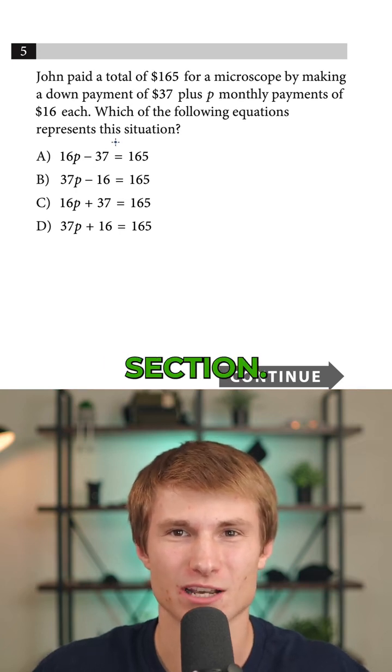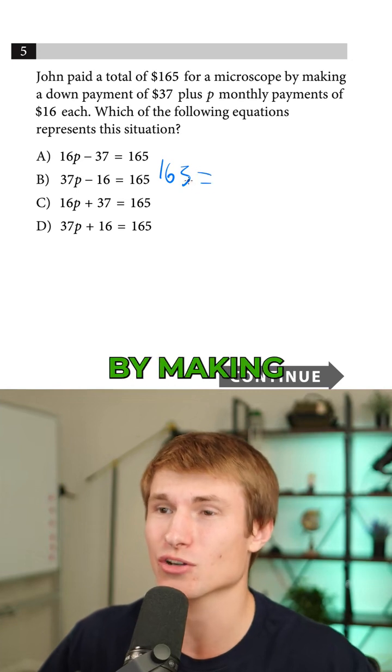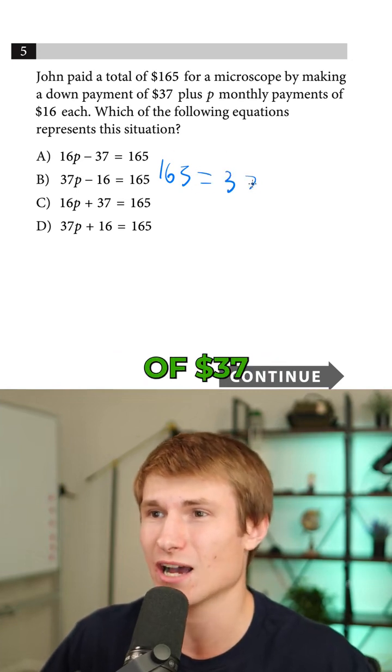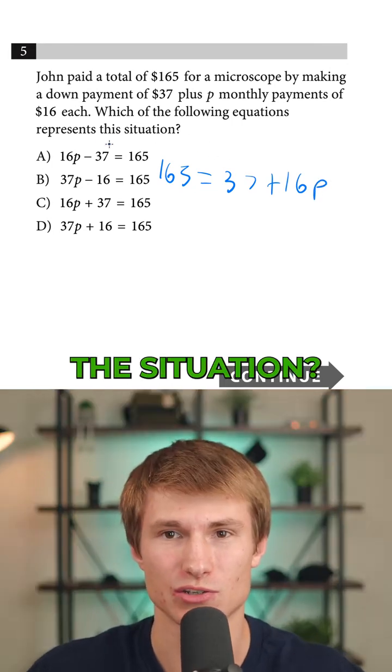Here's how to be more efficient on the SAT math section. Question five states that John paid a total of $165 for a microscope by making a down payment of $37 plus P monthly payments of $16 each. Which of the following equations represents the situation?